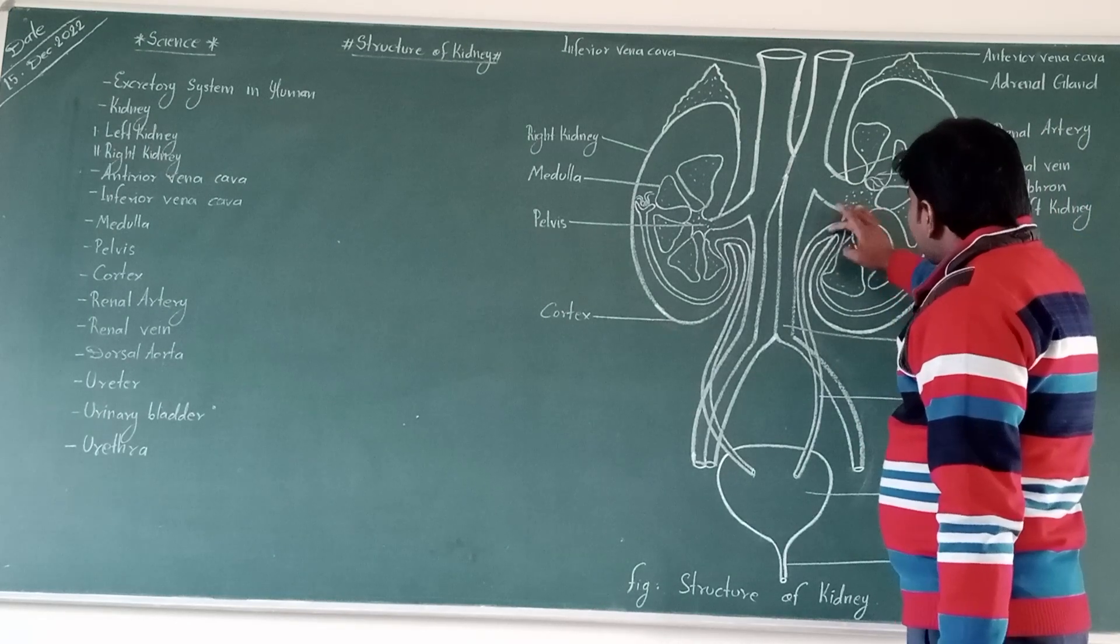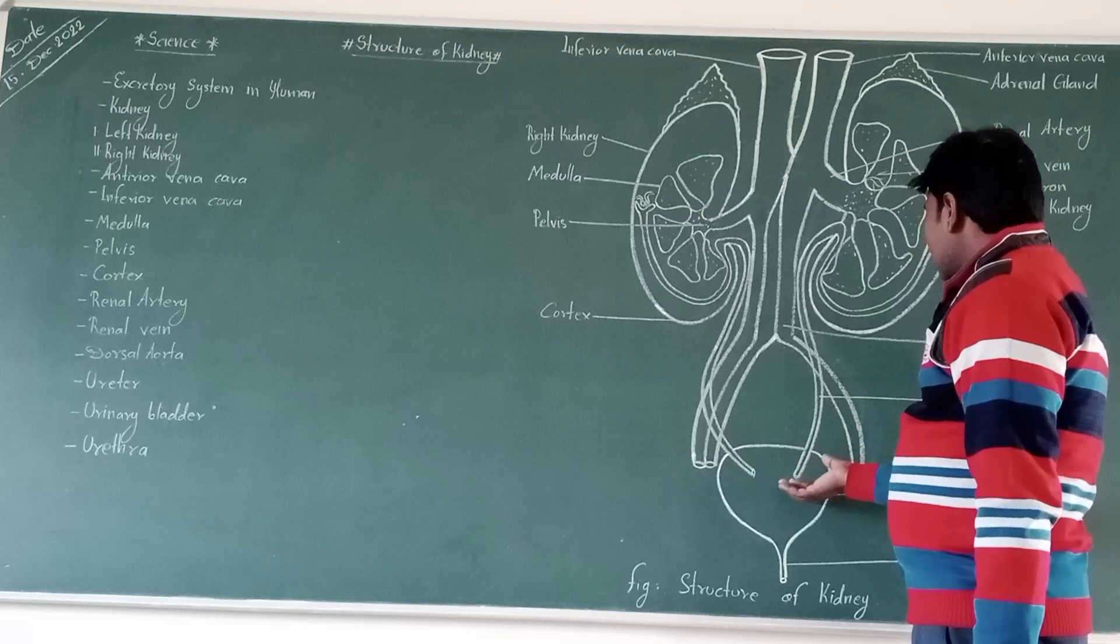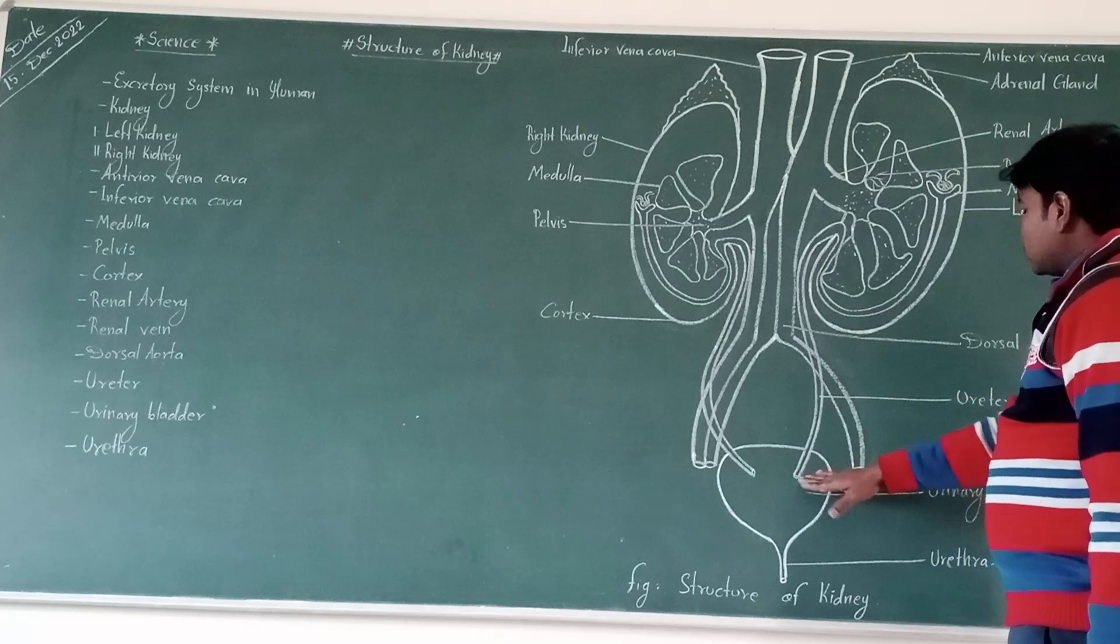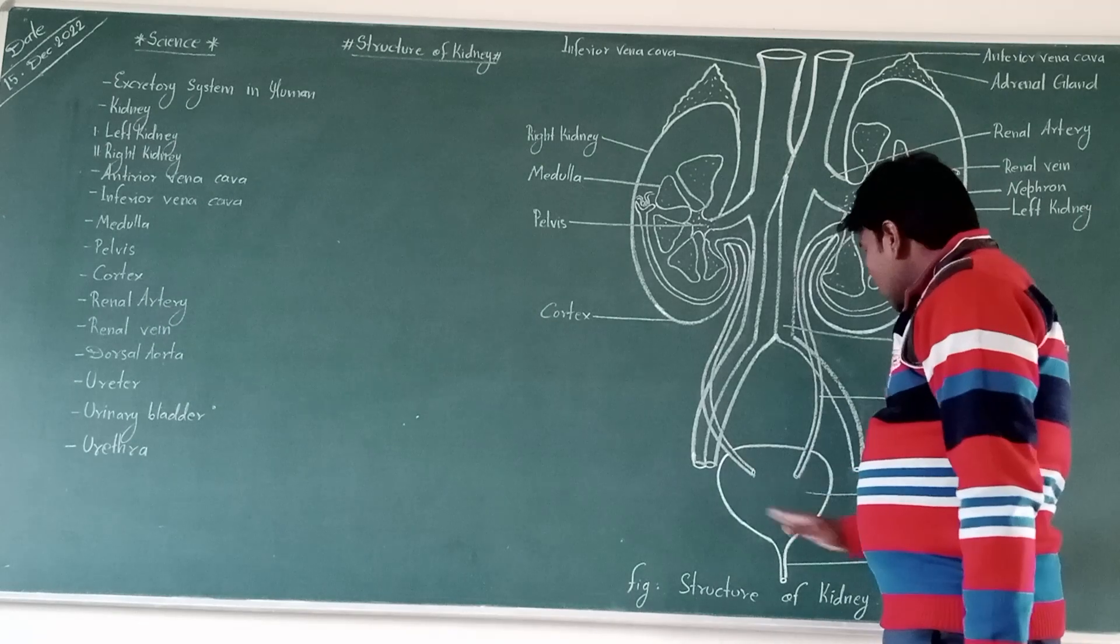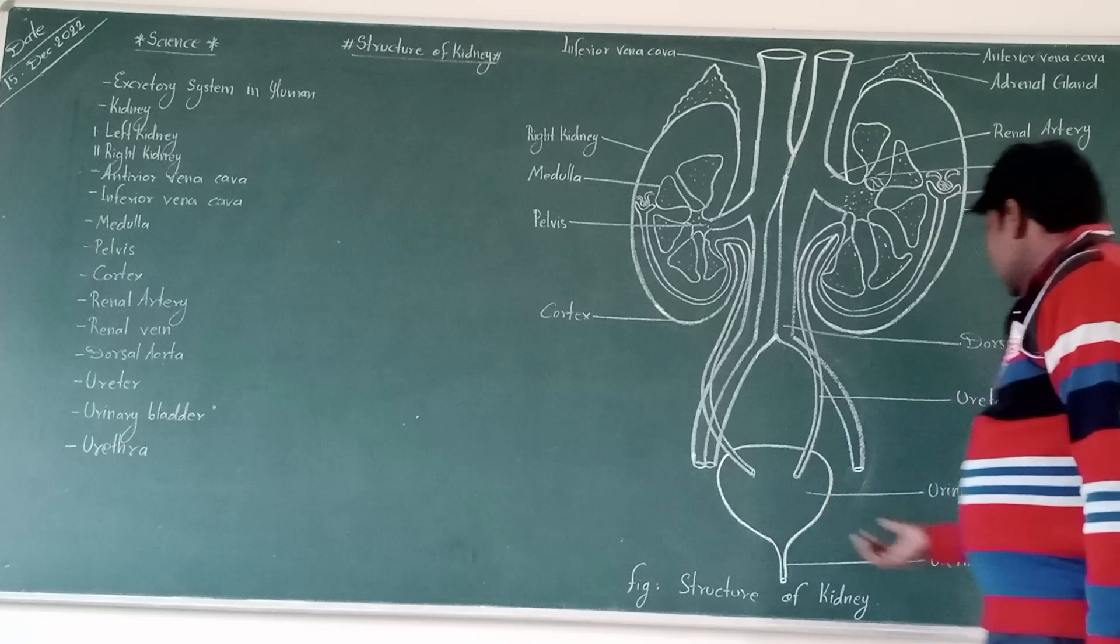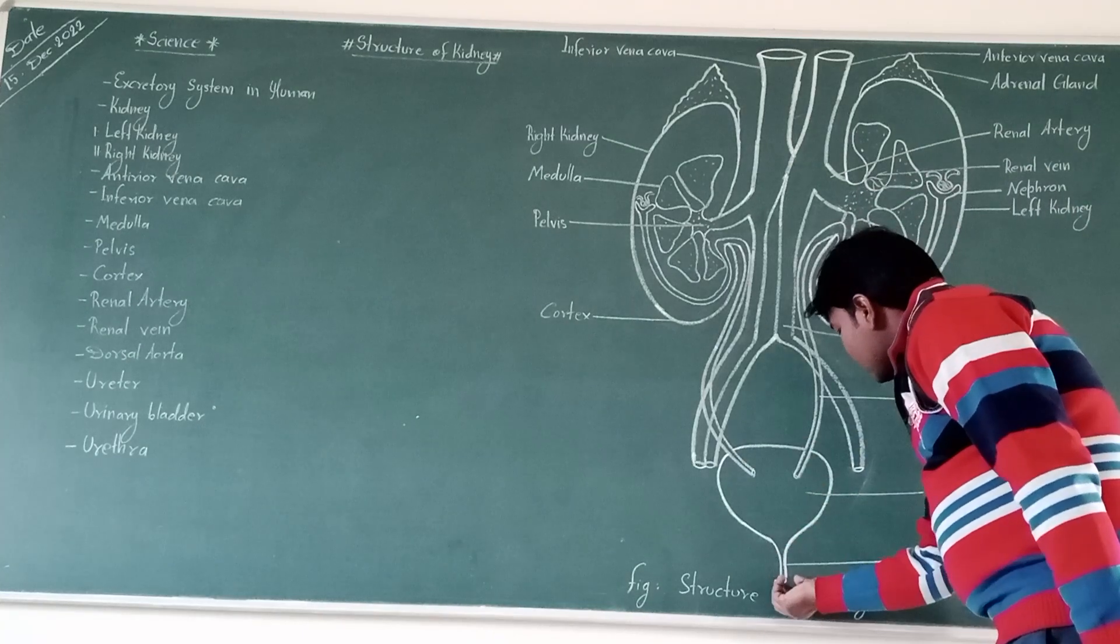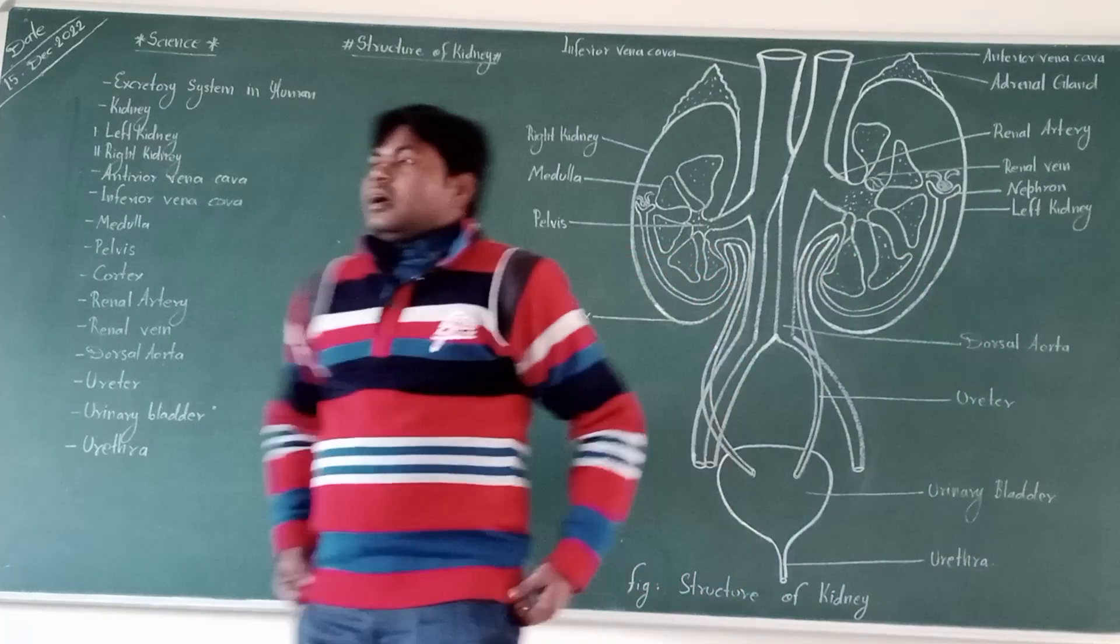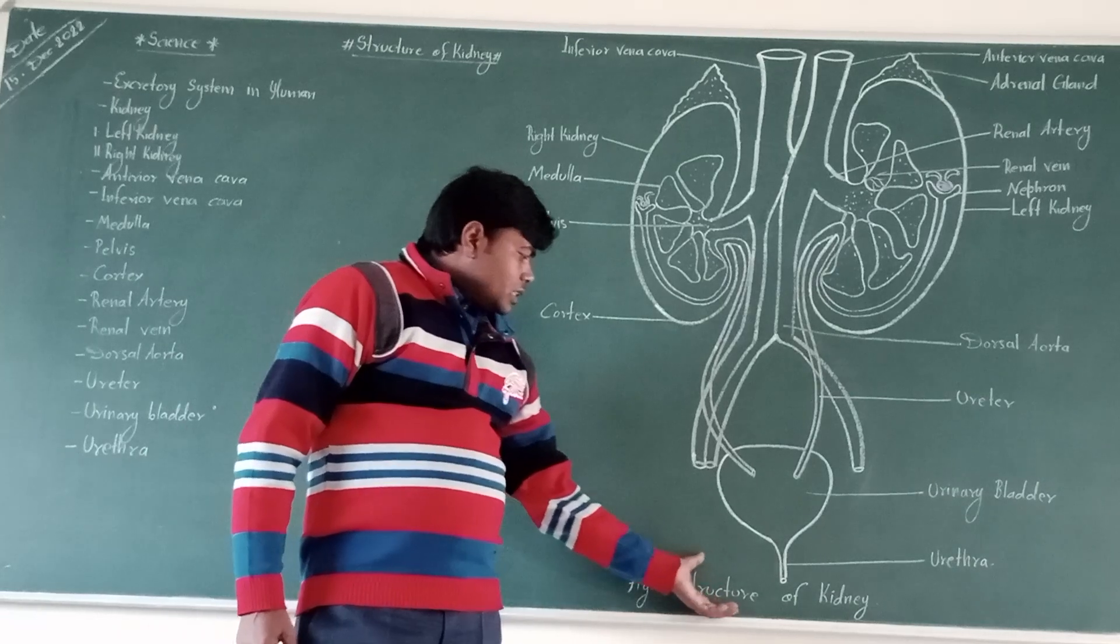And next, ureter. Ureter are the canal-like structure, and then ureter of the flow. It is a tube-like structure that may pass out of the unit, that it may contain and whole functions of the kidney may be very well due to the structure of kidney.